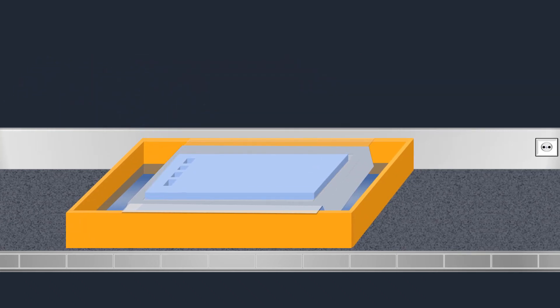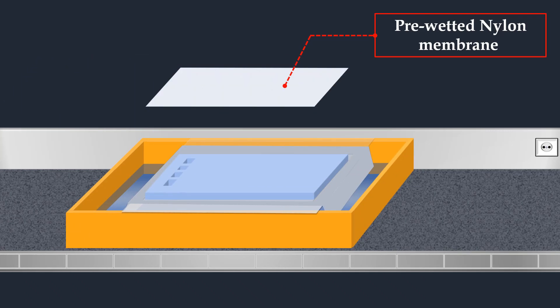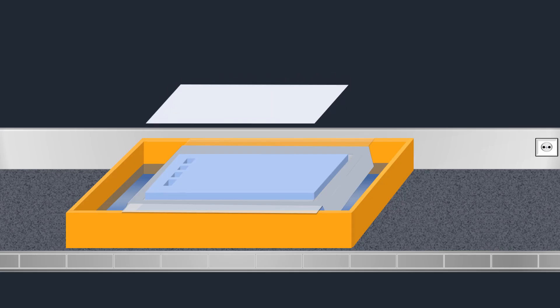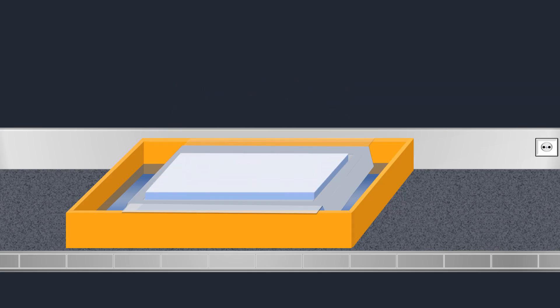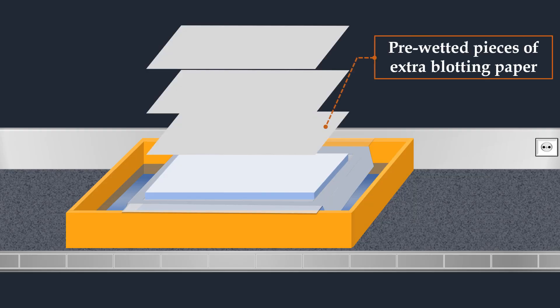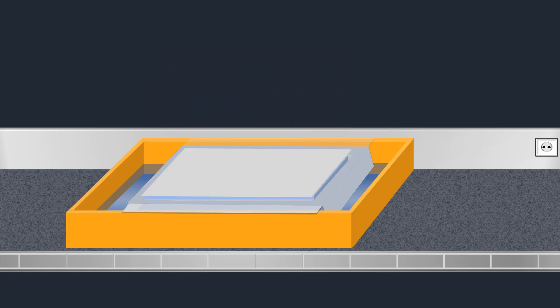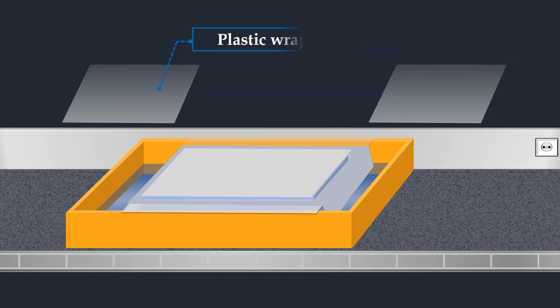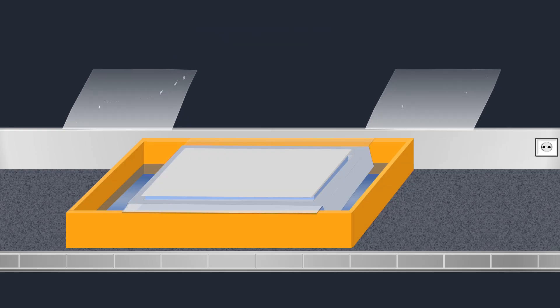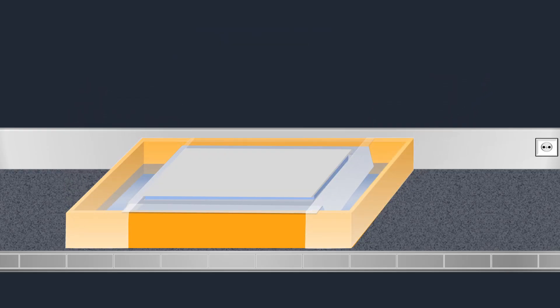Then a sheet of nylon membrane with the same size as the gel is pre-wetted with the transfer solution and placed on top of the gel. Next, pre-wetted pieces of extra thick blotting paper are placed on top of the membrane. The exposed areas of the wick are covered with strips of plastic wrap to prevent transfer buffer from bypassing the gel during the transfer process.